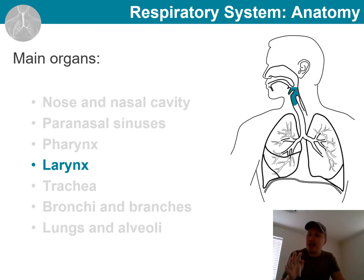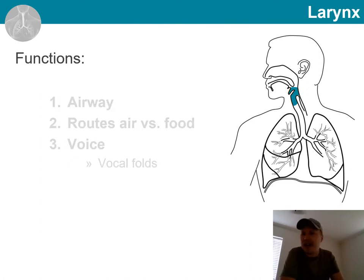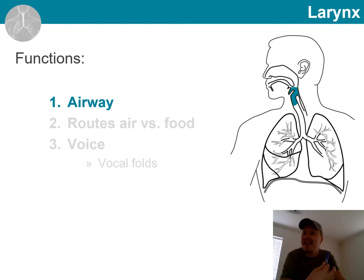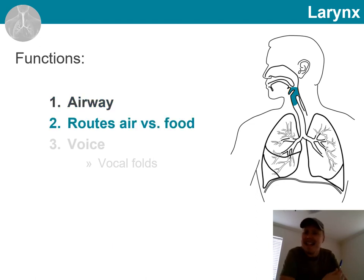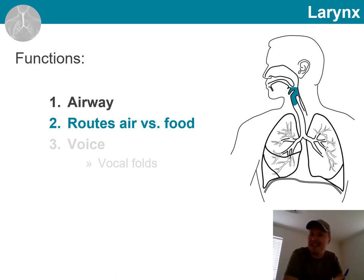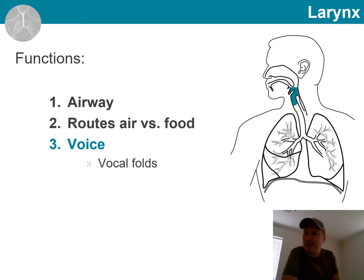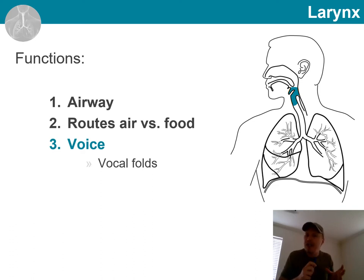We should also talk about the functions of the larynx. First and most obvious is that it provides the airway — it is here that the air passes along to and from the trachea. It also has an important role in routing air and food into the correct paths, either towards the esophagus or trachea. And finally, this is where voice production takes place, with the vocal cords and arytenoids controlling how tight those vocal cords are.